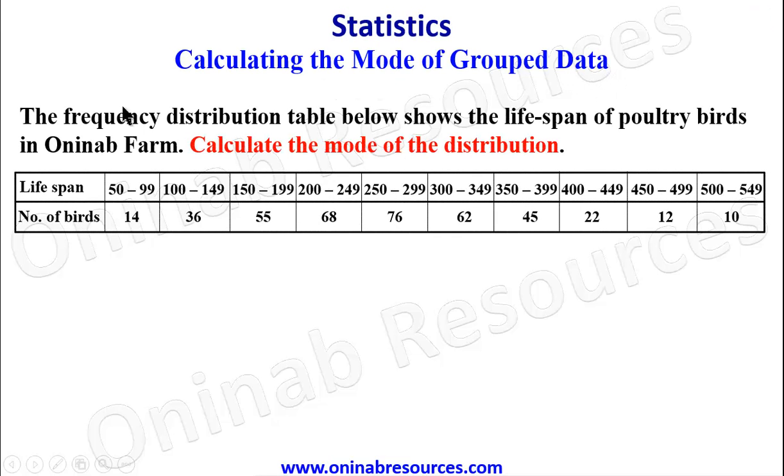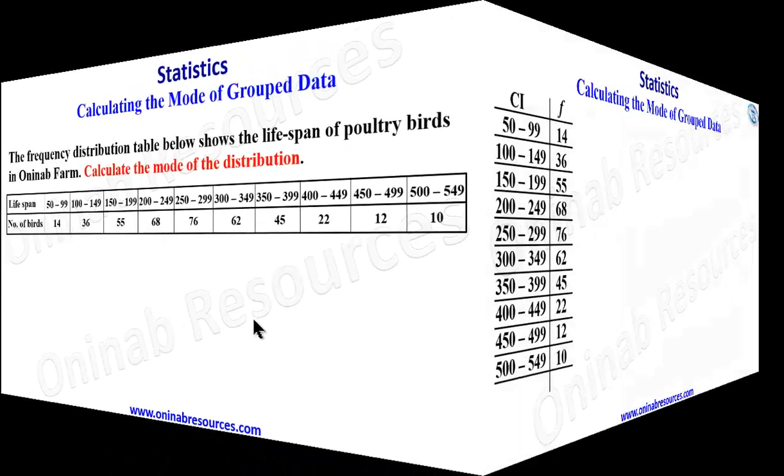So we start with the problem. The frequency distribution table below shows the lifespan of poultry birds in Oninab farm. Calculate the mode of the distribution. We have the frequency distribution table here. Lifespan has the class intervals and the number of birds are given for each of the class intervals. So we go ahead to calculate the mode.